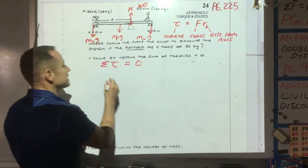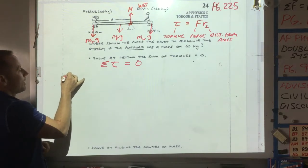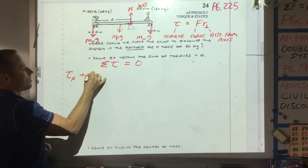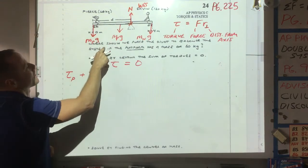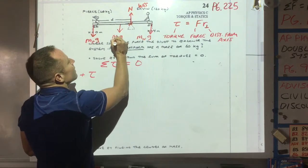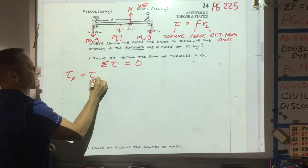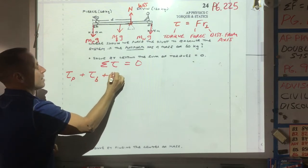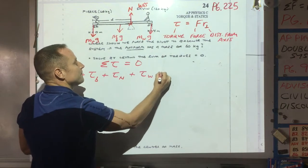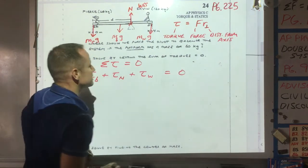The way to start this, it says we need to let the sum of the torques go to zero. So that means there should be a torque from Pierce, a torque from the board, potentially a torque from the normal force, a torque from Wes. And all those torques need to add to zero.